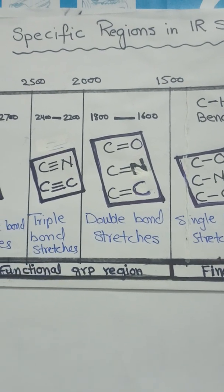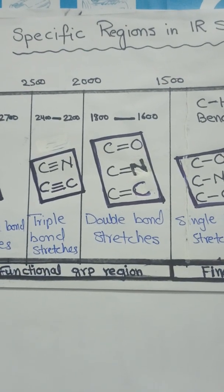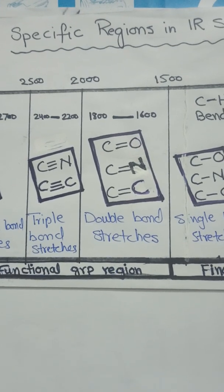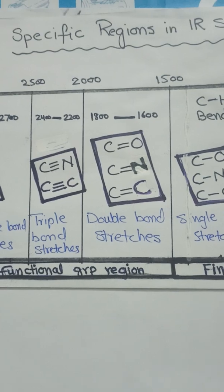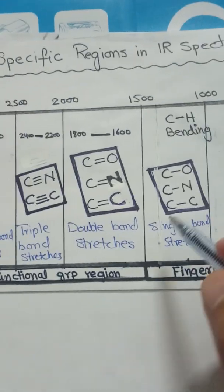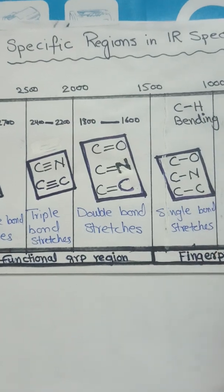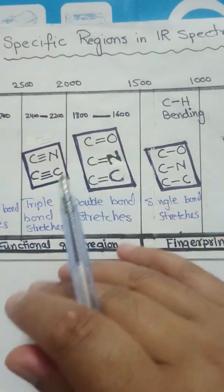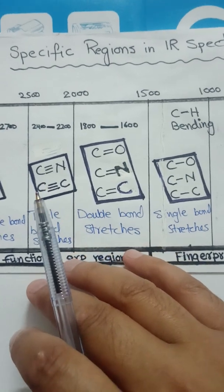Dear students, assalamu alaikum. In our previous video we studied in IR spectroscopy what are the different factors that affect absorption frequency. Today we will discuss different regions in the IR spectrum that are important and what are the different functional groups and the regions where they absorb radiation.